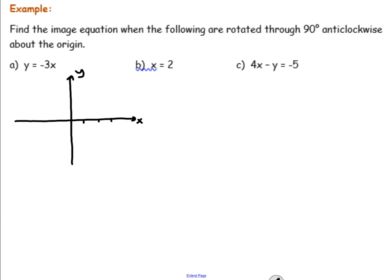I would suggest maybe go up by 3 going this way: 3, 6, or negative 3, negative 6, just to give it a broad range of numbers. So let's draw the line y equals negative 3x.